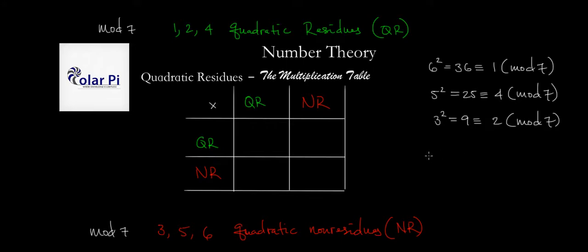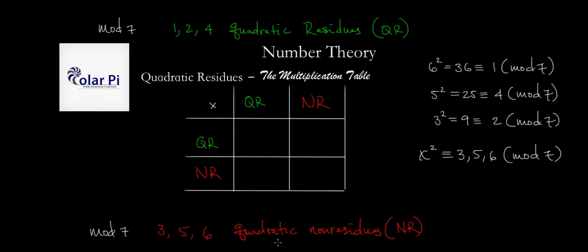Now, notice that there is no x where x squared is congruent to 3, 5, or 6 mod 7. There is no x value for which this is true — for which x squared is congruent to 3, 5, or 6 mod 7. And that is why 3, 5, and 6 are quadratic non-residues, because there is no such x where this is true.